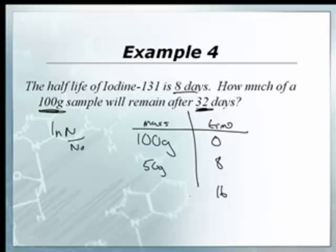And if then I go to 16 days, I keep adding 8. That's two half-lives. That would be 25 grams. And if I then go to 24, there will be half of this again, 12.5 grams. You just keep cutting in half.